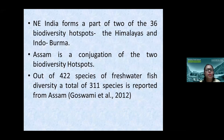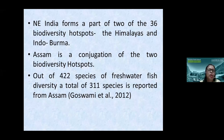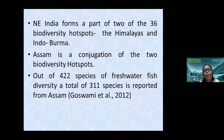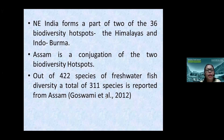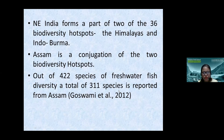Assam is one of the northeastern Indian states and forms part of two of the 36 biodiversity hotspots: the Himalayan and the Indo-Burma hotspots. Being at the conjunction of two biodiversity hotspots, species richness and endemicity are much higher. Some ecologists have surveyed and found information that 422 species of freshwater fish diversity exist, out of which 311 species are reported from the northeastern states and from Assam specifically. So Assam is rich in freshwater fish diversity.